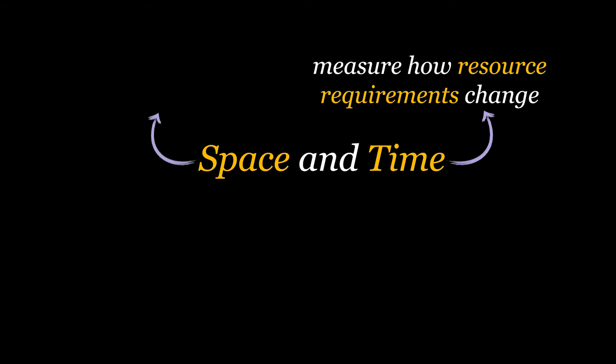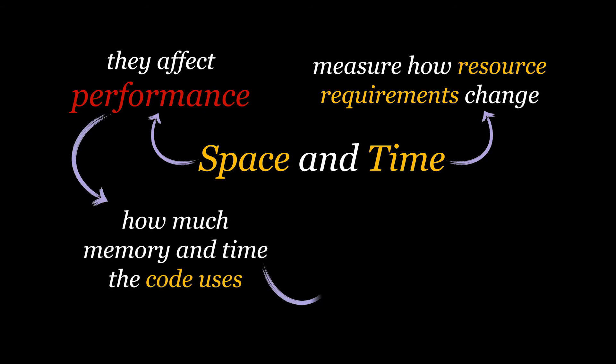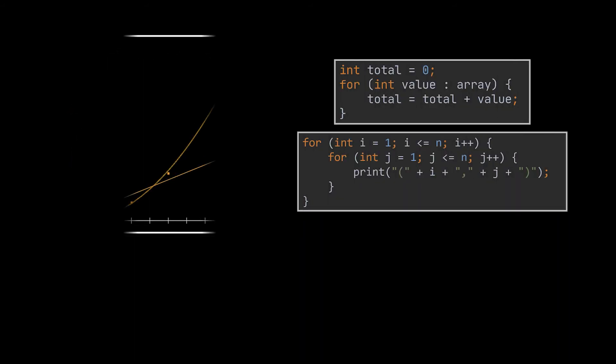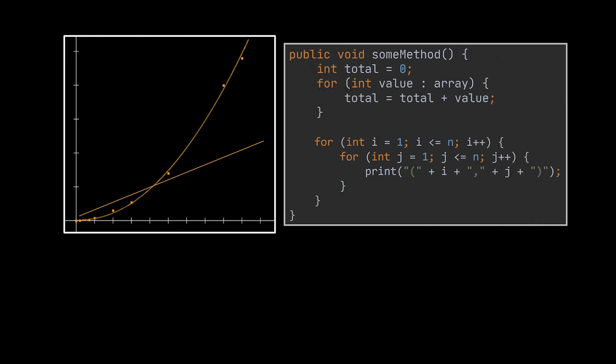These two complexities measure how resource requirements change as the size of the problem grows. They both affect performance, which indicates how much of these resources the code employs. Efficient code uses fewer resources along both axes. Code can also be more performant if it uses more of the resources it has plenty of rather than those it lacks. We will encounter many examples where we need to sacrifice space in favor of time and vice versa.